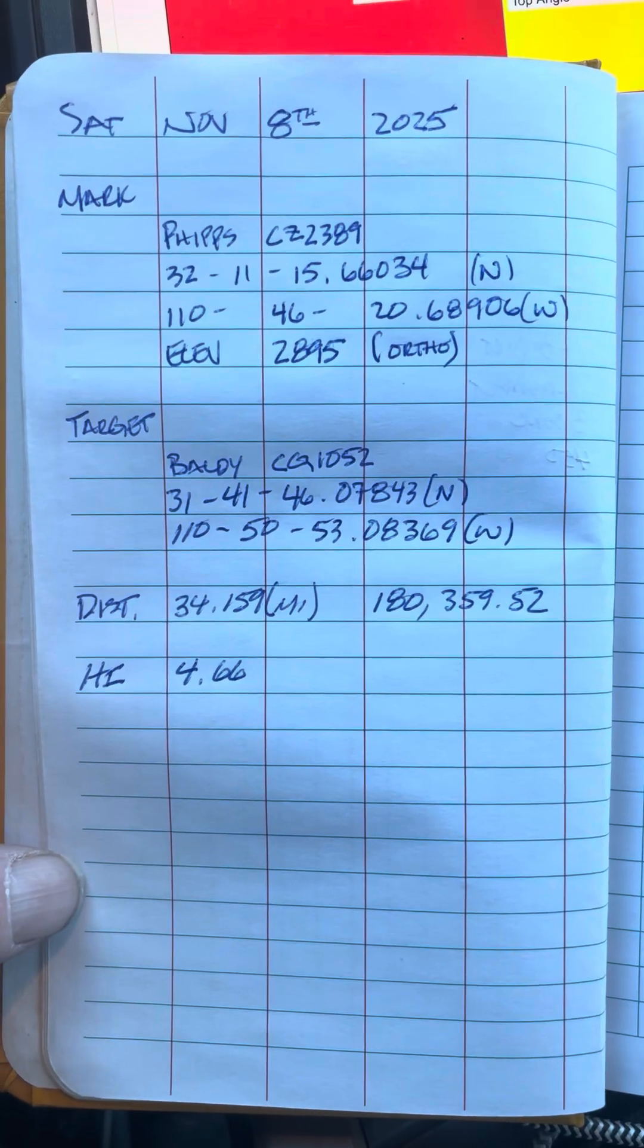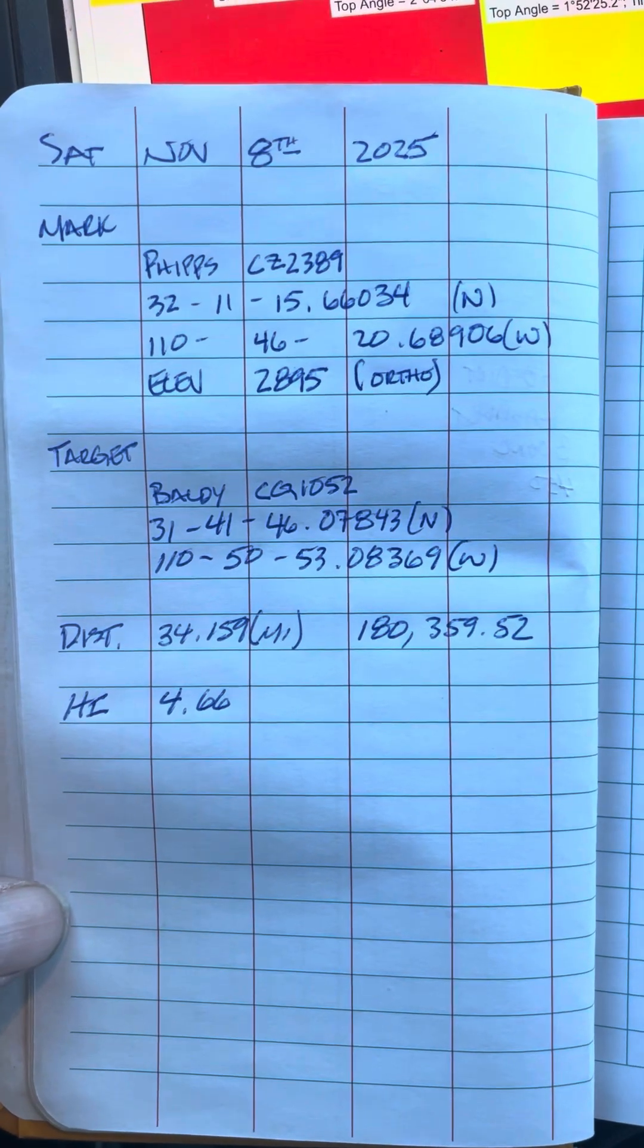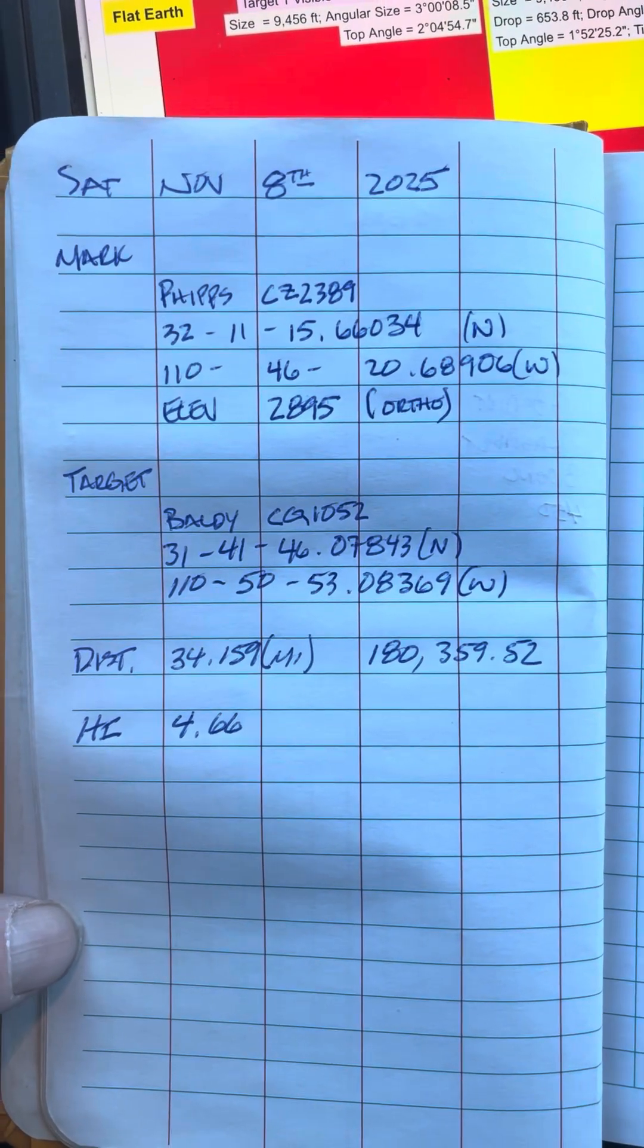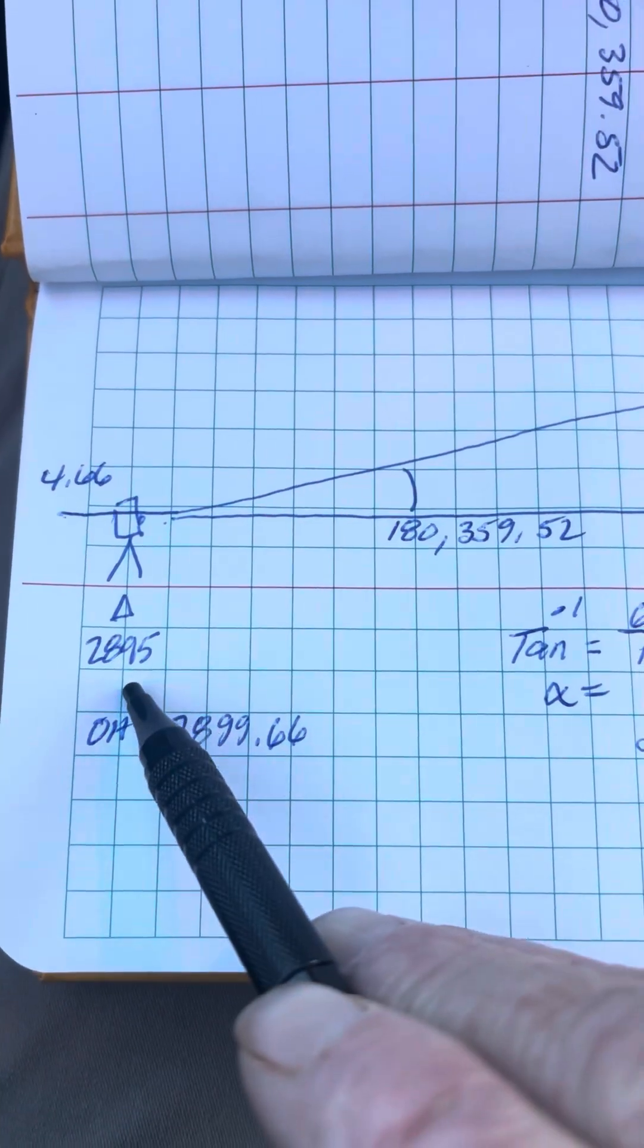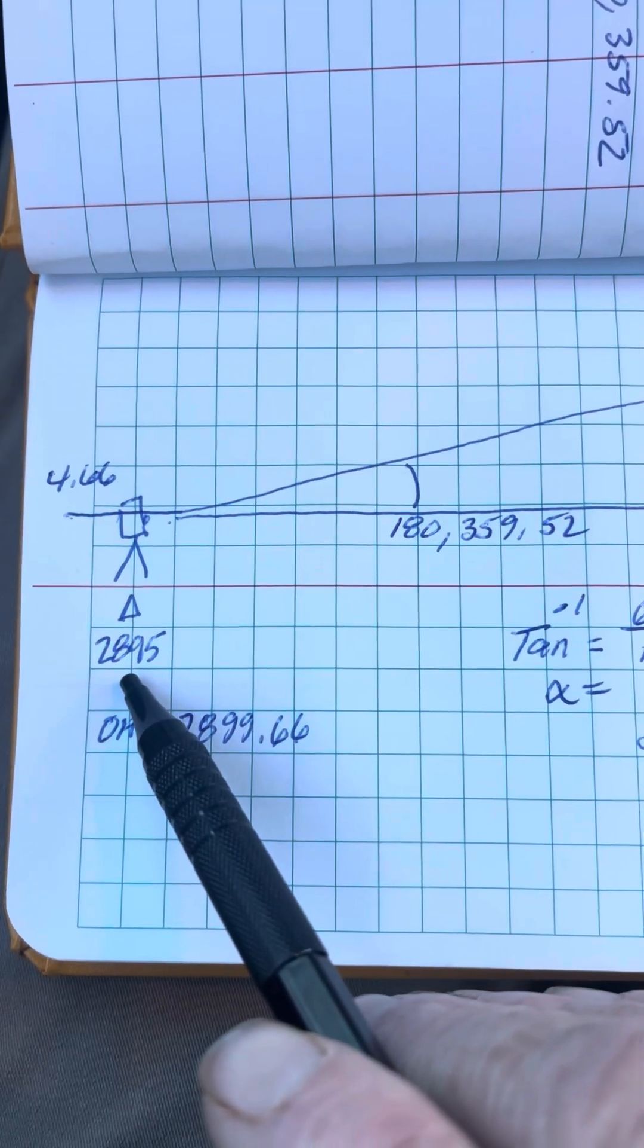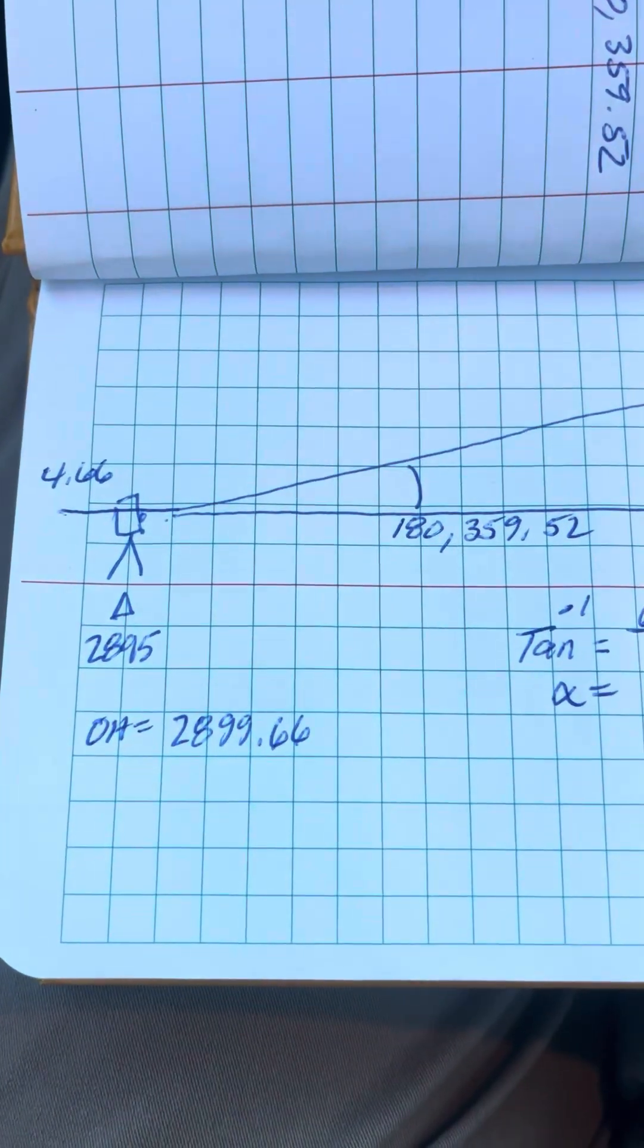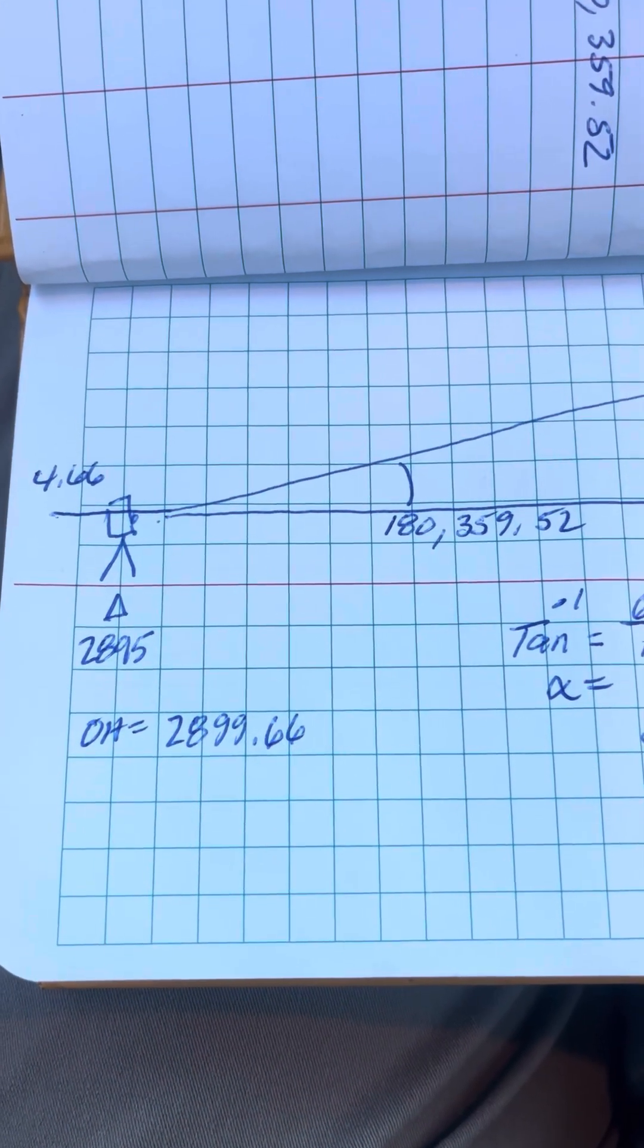Now that we have the data recorded, we've got both vertical and horizontal positions of the mark or point of observation to the target which is Mount Wrightson. We can calculate what the angle of elevation or alpha angle should be on a flat earth. This is where I'm located here, right above that monument, and that has an elevation of 2,895 feet. I then add the height of the instrument to it which gives me an observation height of 2,899.66.